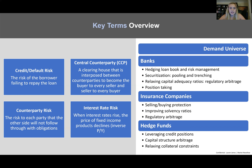In addition, we have interest rate risk. When rates rise, the price of fixed income products declines — this is because of your DV01 and duration. Recall that duration is the tangent line approximation for the price-yield curve, giving you the inverse relationship between price and yields. When you are long a bond, you want yields to fall.